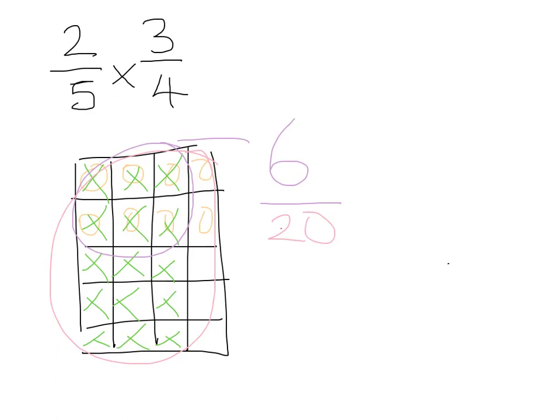So my fraction is 6 over 12. Again, I say, I know that this fraction can be reduced. And so I go ahead, and I divide both by 2, and I end up with 3 over 10.